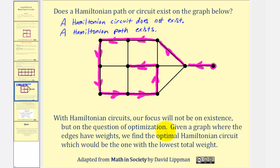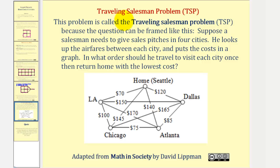With Hamiltonian circuits, our focus will not be on existence, but on the question of optimization. Given a graph where the edges have weights, we want to find the optimal Hamiltonian circuit, which would be the one with the lowest total weight. This brings us to a famous problem called the traveling salesman problem, or TSP for short. Suppose a salesperson needs to give sales pitches in four cities different from their home city. He looks up the airfares between each city and puts the cost in a graph. In what order should he travel to visit each city once, then return home with the lowest cost?